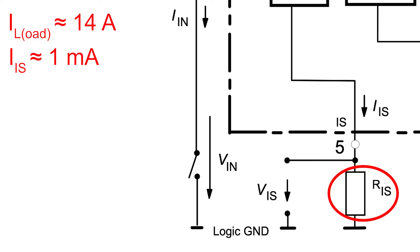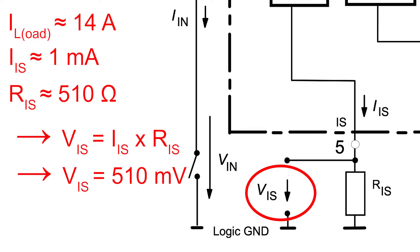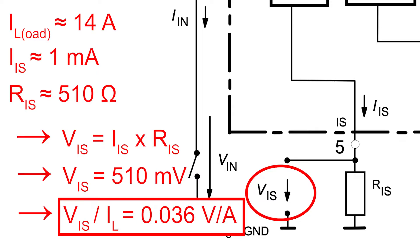Your Teensy microcontroller cannot measure currents, but you can still place a resistor to measure the voltage drop. When you choose a resistor to be equal to 510 ohm, the voltage drop for a current of 1 milliamp equals 510 millivolt. This voltage drop is perfectly measurable by your Teensy. Taking into account all ratios, the voltage drop over the resistor is equal to the load current multiplied by 0.036.